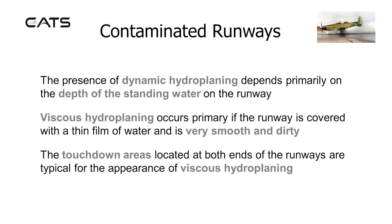The presence of dynamic hydroplaning depends primarily on the depth of the standing water on the runway. Viscous hydroplaning occurs primarily if the runway is covered with a thin film of water and is very smooth and dirty. The touchdown areas located at both ends of the runways are typical sites for the appearance of viscous hydroplaning.